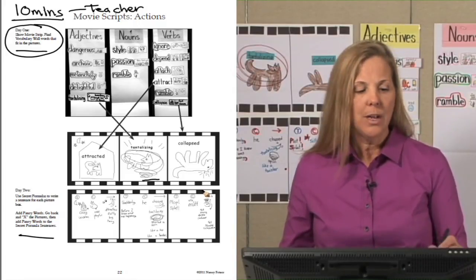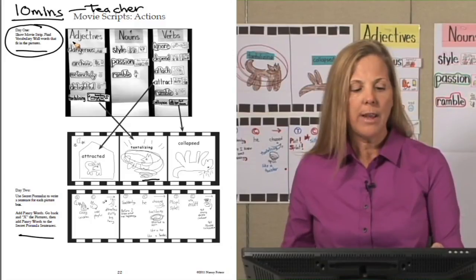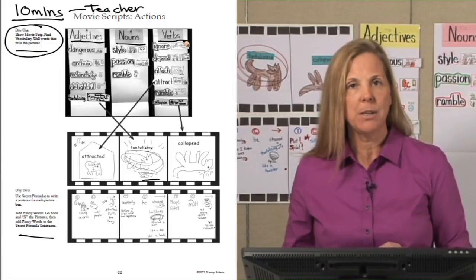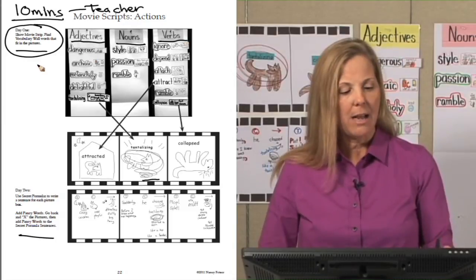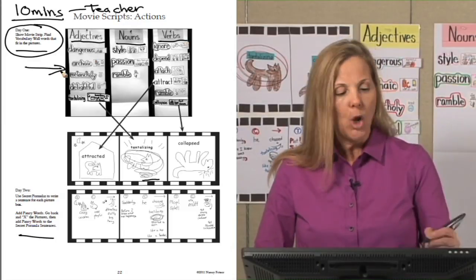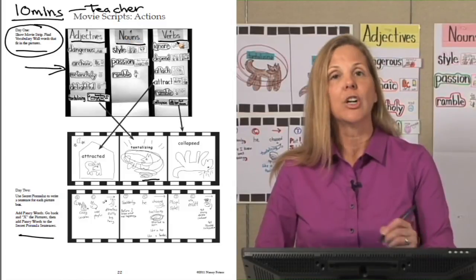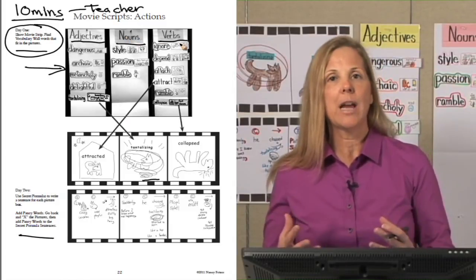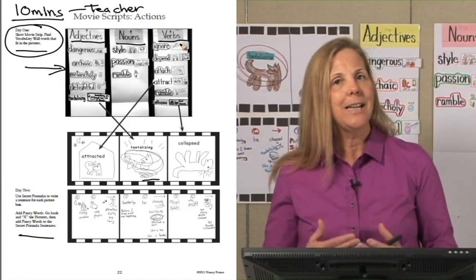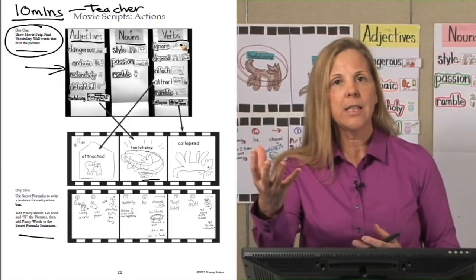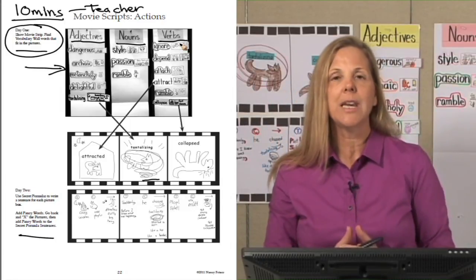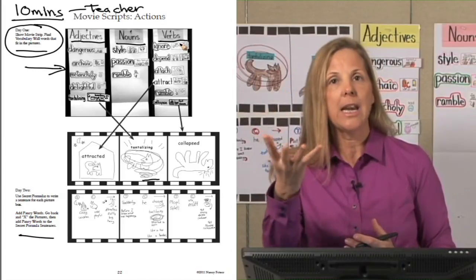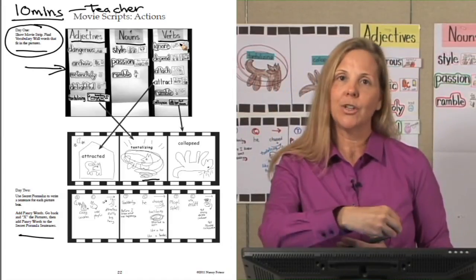The next thing we're going to do is we're going to go to our vocab wall and try to take previously learned vocabulary words from language arts that we've posted on our vocab wall. Here we have our vocabulary wall with the adjective nouns verbs. Even though you may have a vocabulary wall posted in your room, many children still have a difficult time taking those words and inserting them into their own writing. So this part of the movie script is giving them practice of how to take robust vocabulary words they know and insert it into their writing.